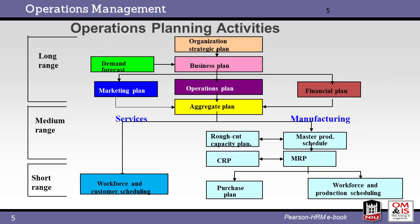This flow diagram shows the linkage between the various planning ranges and plans. All planning is based upon the overall organization strategy, which drives the business plan. The marketing, operations, and financial plans are then created, leading to the aggregate plan, which guides the service and manufacturing operations.